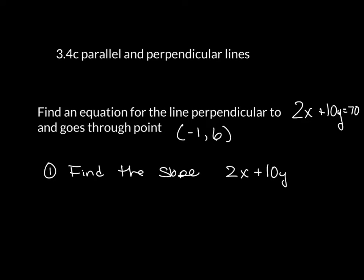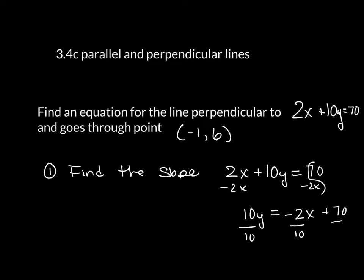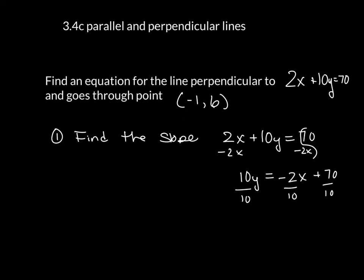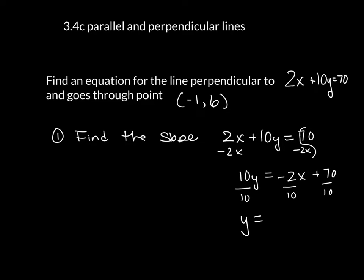I have 2x plus 10y is equal to 70. I subtract 2x from both sides, and I'm left with 10y. You want to write this in two terms: negative 2x plus 70, and then divide everything through by 10. That gives us y is equal to negative 2 over 10 times x. 70 divided by 10 is just 7, and the slope reduces to negative 1 over 5, because both 2 and 10 are divisible by 2.